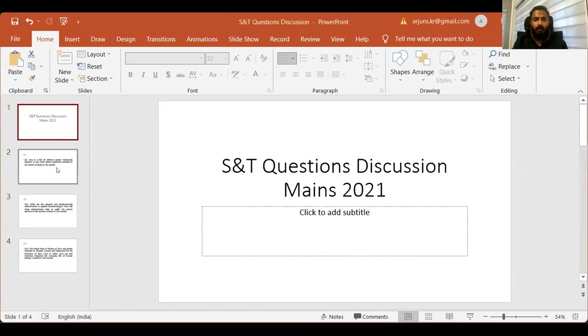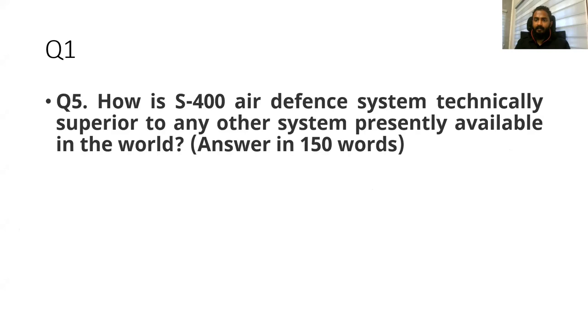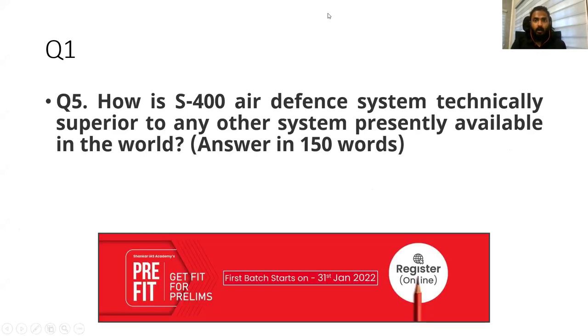Today I'll be discussing science and technology questions asked in the UPSC Mains 2020-21 GS Paper 3. Almost every year we have three questions from science and technology — this year also one 10-marker and two 15-markers. The total weightage of science and technology was 40 marks in GS Paper 3. These were the questions: the first was a 10-marker about the S-400 air defense system.